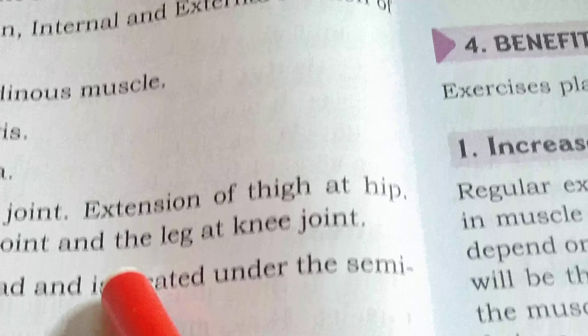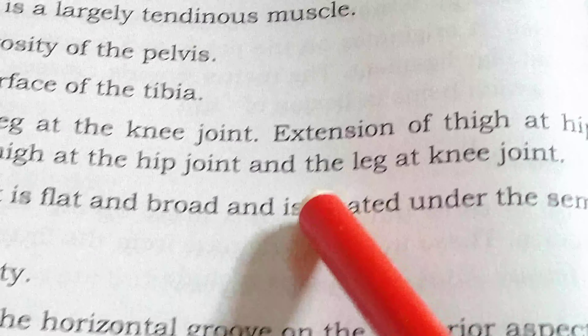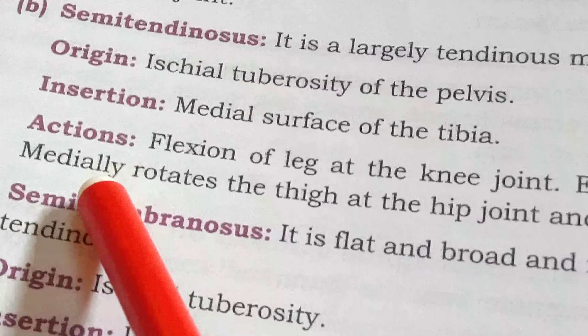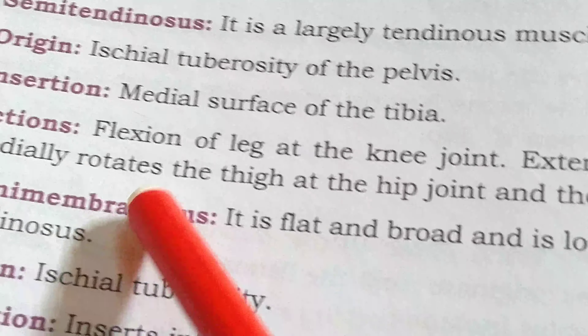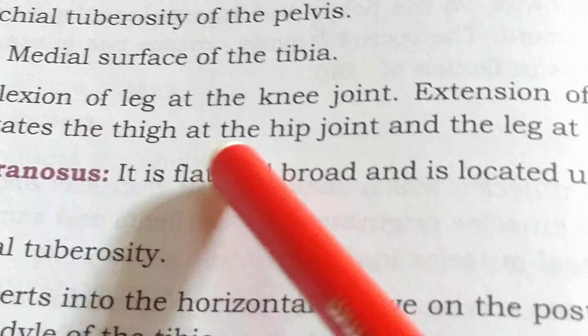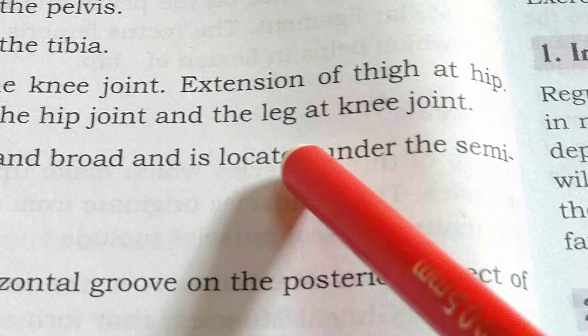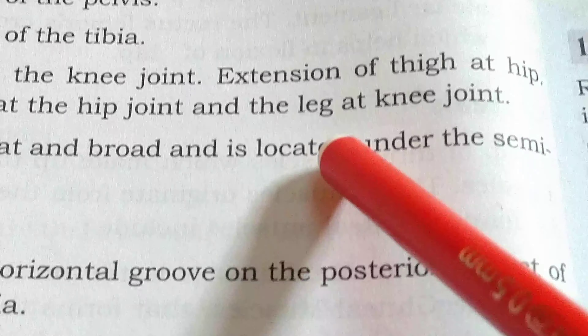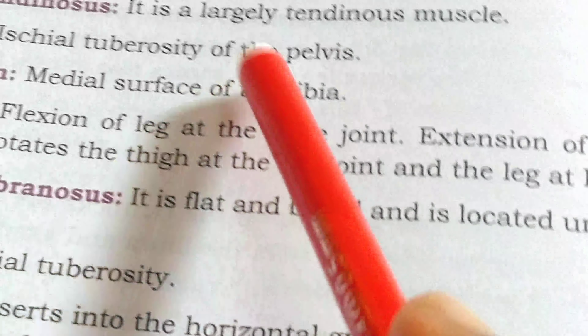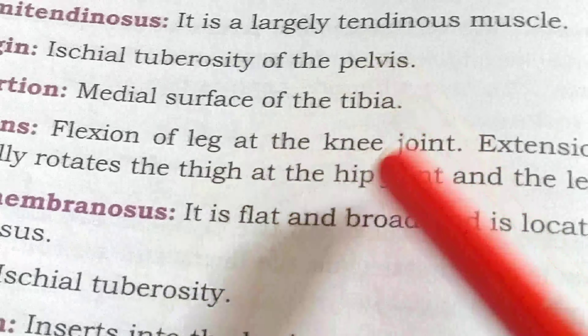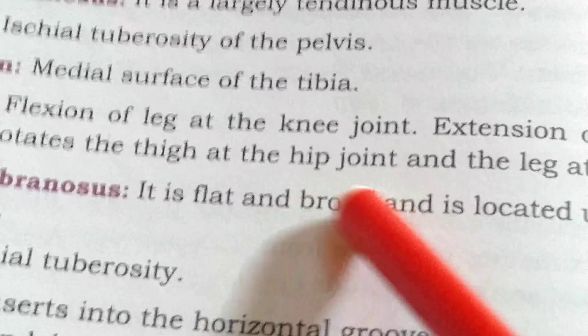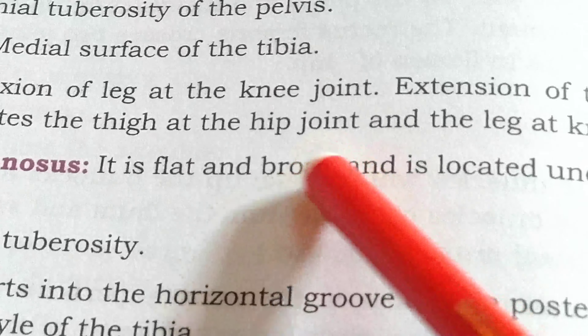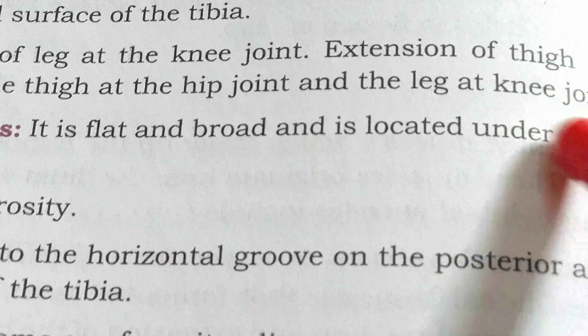Additional actions of semitendinosus include extension of the thigh at the hip, and medial rotation of the thigh at the hip joint and the leg at the knee joint. With this muscle, we can move the hip joint and rotate the waist, as well as move the knee joint.